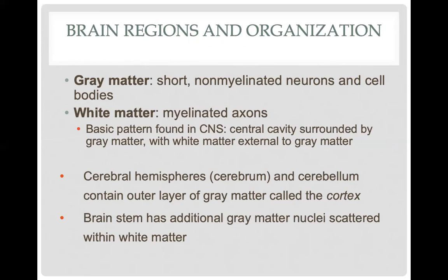There is a distinction between gray matter and white matter that I'll show you on a picture in just a second. When talking about the cerebrum, the largest part of your brain, we have the cerebral hemisphere — literally breaking the cerebrum into two halves. In the cerebrum and also in the cerebellum, the gray matter is referred to as the cortex, or more specifically the cerebral cortex.